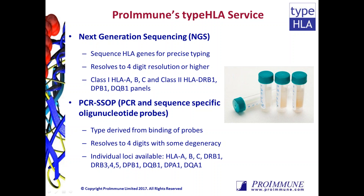PCR-SSOP, which stands for sequence-specific oligonucleotide probes, uses Luminex-labeled oligonucleotides which bind to the PCR products of the HLA gene of interest, and the unique binding reactivities of the panel determine the HLA type. This technique resolves the HLA type to four digits but with degeneracy in some cases, and PCR-SSOP typing can be ordered on a per-locus basis.